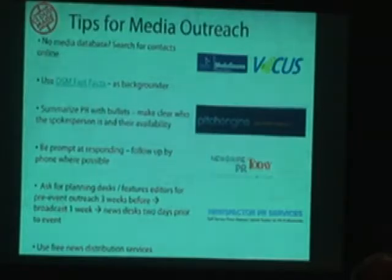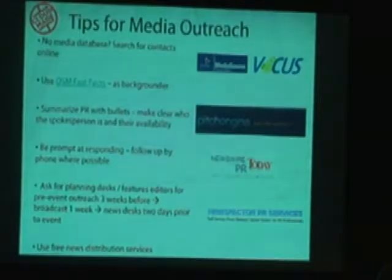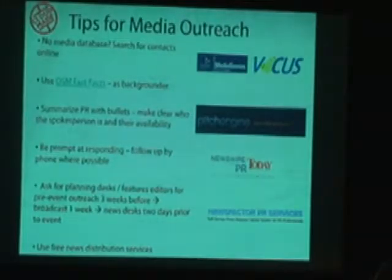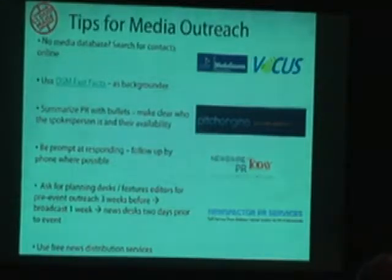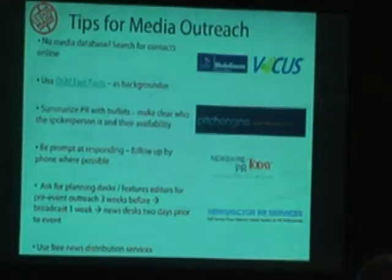One thing I've created is an OpenStreetMap Fast Facts document, which is literally a two-page document you can find on this URL — it links to the OpenStreetMap wiki. It really just highlights what OpenStreetMap is all about, and it does it in layman's terms. So it's an at-a-glance document. Journalists can just scan through it and completely understand what OpenStreetMap does and get examples about how people are using it and why it's benefiting communities.